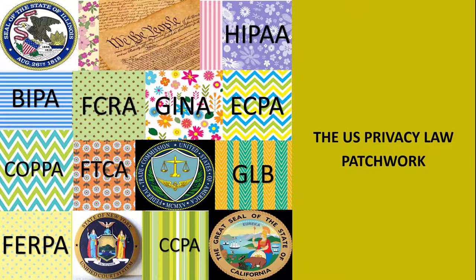Many privacy laws do not apply to scholarly TDM activities, however. We can take constitutional privacy protections off the table for a start. The Constitution protects against unreasonable searches and seizures of private data and limits the government's right to compel disclosure of personal matters as part of a regulatory program. The constitutional rules apply to government actors, which means they don't apply, in any event, to researchers at private institutions.